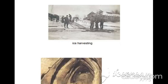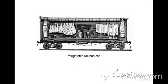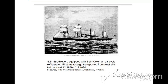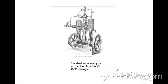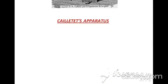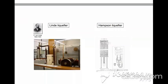You can see the first diagram is of ice harvesting, and the second one is an ice storage cave situated in Germany, and the next one is a refrigerated railroad car. Now visit some commercial refrigeration applications: in the first diagram you can see a cargo equipped with refrigerated equipment, and in the second diagram an ice machine is visible which was constructed in 1892.